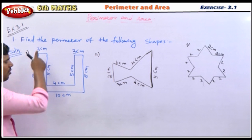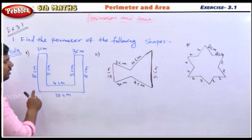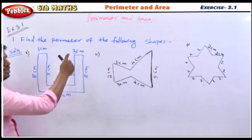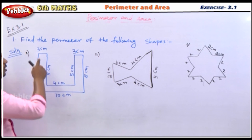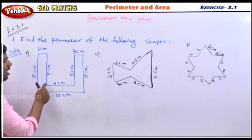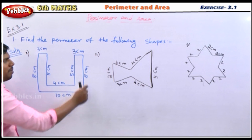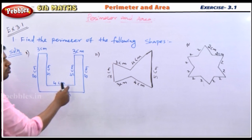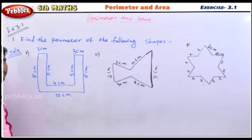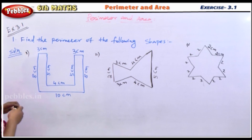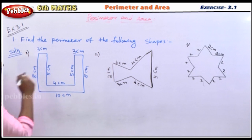The perimeter is the measure of the boundary of a figure. If you close the figure and add all the boundary lengths, you get the perimeter. Perimeter is the first step.